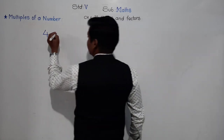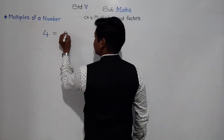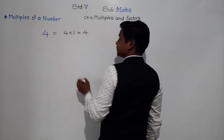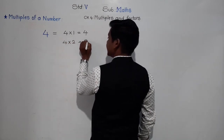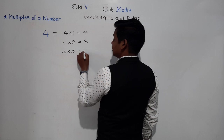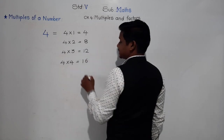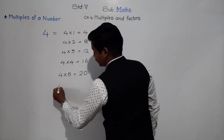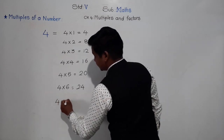If we multiply 4 with 1, we get 4. If 4 is multiplied by 2, we get 8. If 4 is multiplied by 3, we get 12. Similarly, 4×4 = 16, 4×5 = 20, 4×6 = 24, and 4×7 = 28.